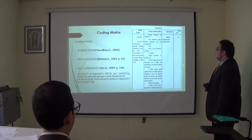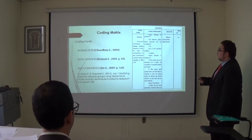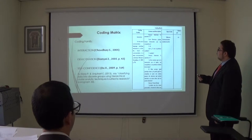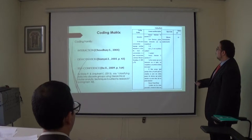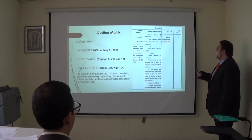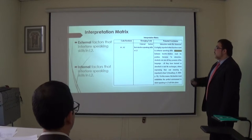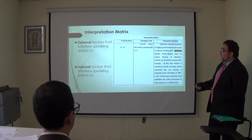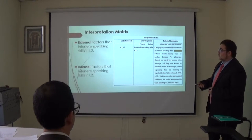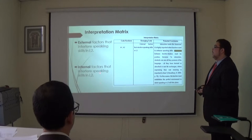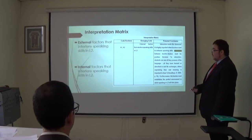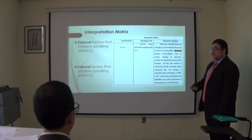Here is an example of the coding matrix showing the name of the coding family, the reference, and the sources — from interview two, focus group, and so on — as well as the open code name and entry number. From the interpretation matrix, two new groups emerged: external factors that interfere with speaking skills in the second language, and internal factors that interfere with speaking skills in the second language.